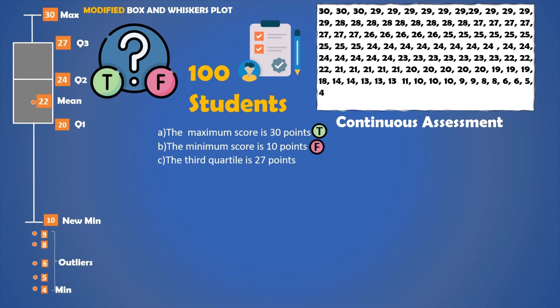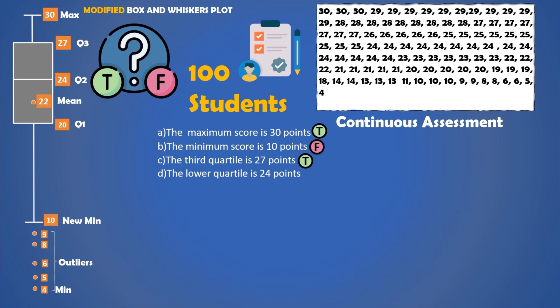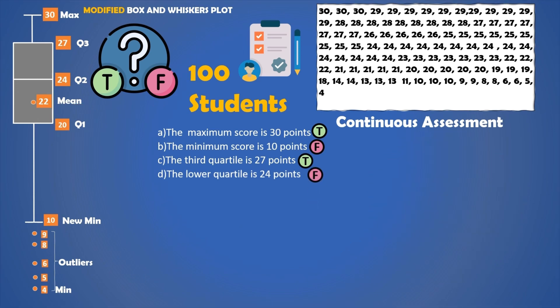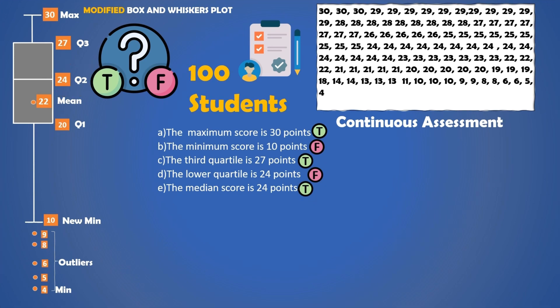The third quartile is 27 points — this is true. The lower quartile is 24 points — this is false. Q1 is 20 points. The median score is 24 points — this is correct. Q2, which is the median, does the same thing as the fifth decile, and this is 24 points. The arithmetic mean score is 22 points — this is true.